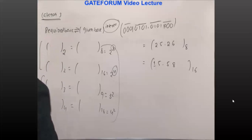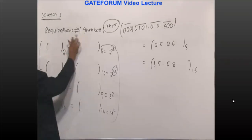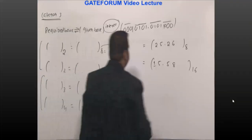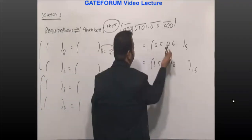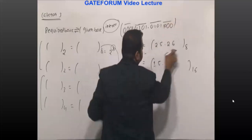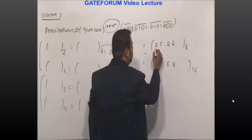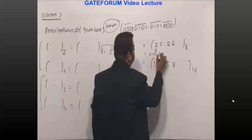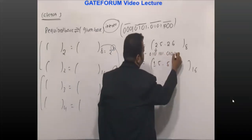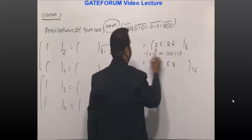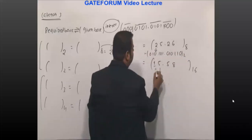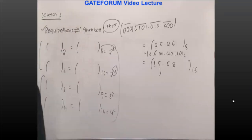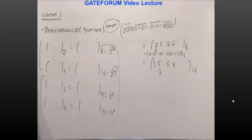In the reverse direction — I put a bidirectional arrow — you can go from the larger base to the smaller as well. In that case, directly each digit is replaced by its 3-digit binary equivalent. For example: this digit gives 0 1 0, this gives 1 0 1, this gives 0 1 0, this gives 1 1 0 — that is the binary equivalent. Coming back from hexadecimal, each digit is replaced by its 4-digit binary equivalent.